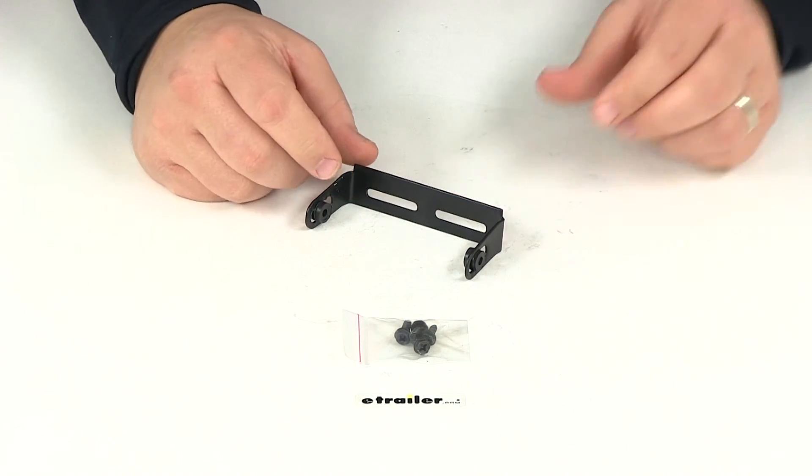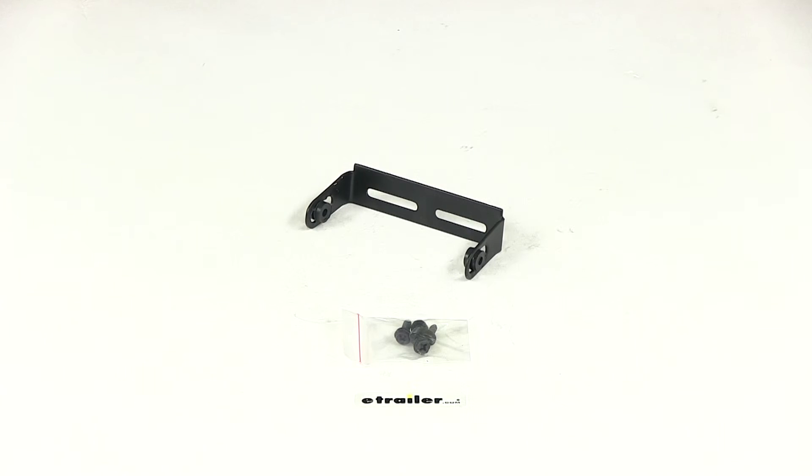That's going to do it for our review of part number C51114. This is the mounting bracket for the Curt Venturer trailer brake controller.